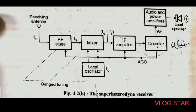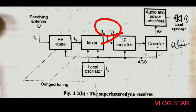The problems in TRF receivers are solved in the superheterodyne receiver by converting every selected RF signal to a fixed lower frequency called the intermediate frequency (IF), which is fo minus fs. This intermediate frequency concept is used in the superheterodyne receiver. This IF contains the same modulation as the original carrier. Since the IF is lower than the lowest RF signal frequency, the possibility of oscillations and instability is minimized, and the required Q for constant bandwidth does not depend on the incoming signal frequency because the IF is constant for all incoming RF signals.